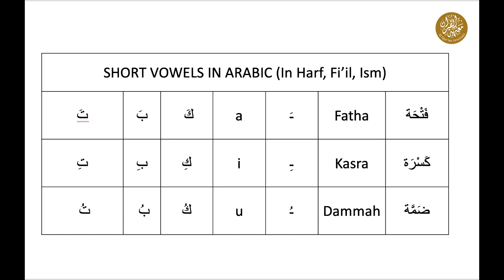Short vowels make a short sound as a, e, u, which is indicated by their harakat: fatah, kasrah, or damma. When harakat fatah is used, the sound is like 'a' — examples: ka, ba, ta. When harakat kasrah is used, the sound is 'e' — examples: ki, bi, ti. When harakat damma is used, the sound is 'u' — examples: ku, bu, tu.